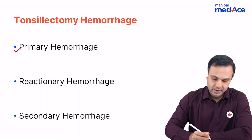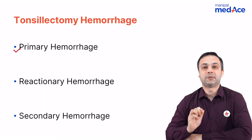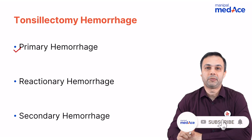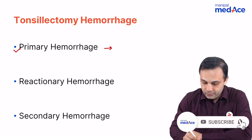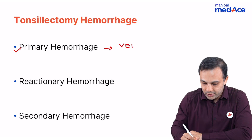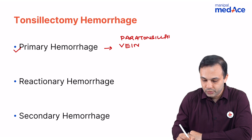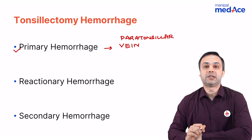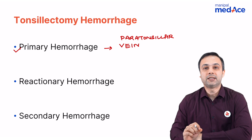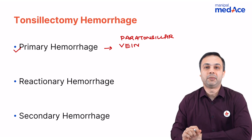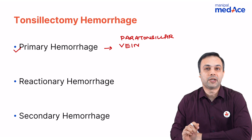One is the primary hemorrhage. What is primary hemorrhage? It occurs during the procedure of tonsillectomy. That is because of vein injury — specifically, the paratonsillar vein. The second most common cause of primary hemorrhage is arterial bleeding, that is any of the arterial vasculature which is supplying the tonsil. If it bleeds, it can produce a primary hemorrhage.